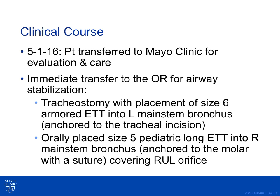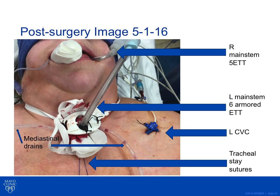An orally placed size 5 pediatric long endotracheal tube was placed into the right mainstem bronchus and anchored to the molar with a suture through the gum, covering the right upper lobe orifice. Tracheal stay sutures were used to secure the tube and reacquire access to the trachea in the event of inadvertent dislodgement. Mediastinal drains were placed deep into the mediastinum to drain the purulent contamination.